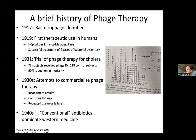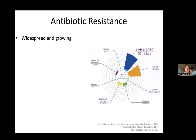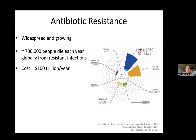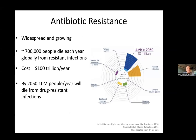Phage therapy sort of languished on the sidelines, kept alive essentially by places in the Soviet Union and Eastern Europe, where there wasn't a pharmaceutical industry and people still needed bacteriophages. But what's happened in the rest of the world is antibiotic resistance. It's currently estimated that over 700,000 people die globally from antibiotic resistant infections, with a tremendous economic cost. These antibiotic resistant strains are spreading, and the current thinking is that by 2050, over 10 million people a year will be dying from drug-resistant infections unless we sharply change the trajectory. And so this begs the question: is there a role again for phage therapy?